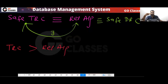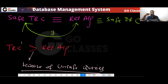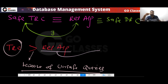What is that extra power? That extra power comes because of unsafe queries. In TRC you can write unsafe queries, but in Relational Algebra there are no unsafe queries — there is no unsafe query in relational algebra.